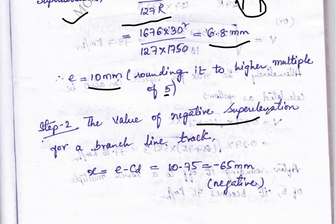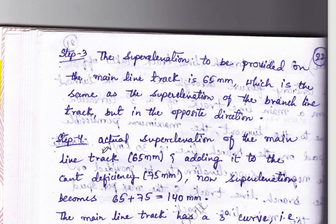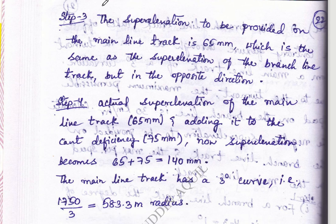In step 2, we calculate the negative super elevation for the branch line using the formula x = e − CD. Substituting the values, we get the negative super elevation as mentioned. In step 3, the super elevation to be provided on the main line track is 65 mm — the same magnitude as the branch line but in the opposite direction.